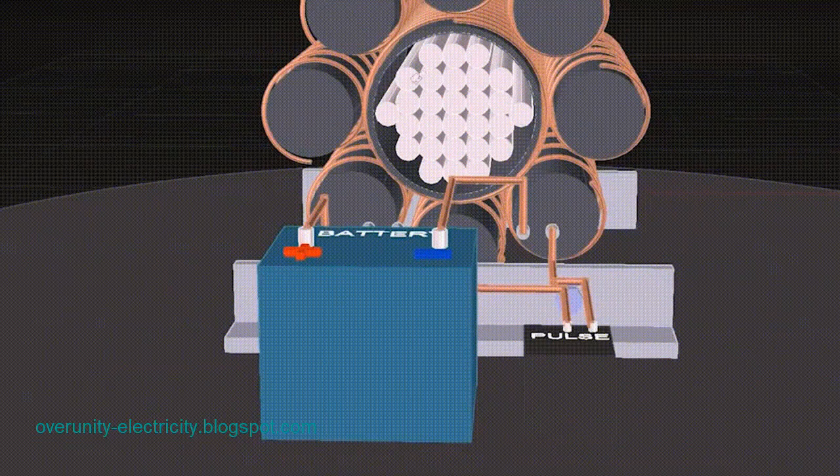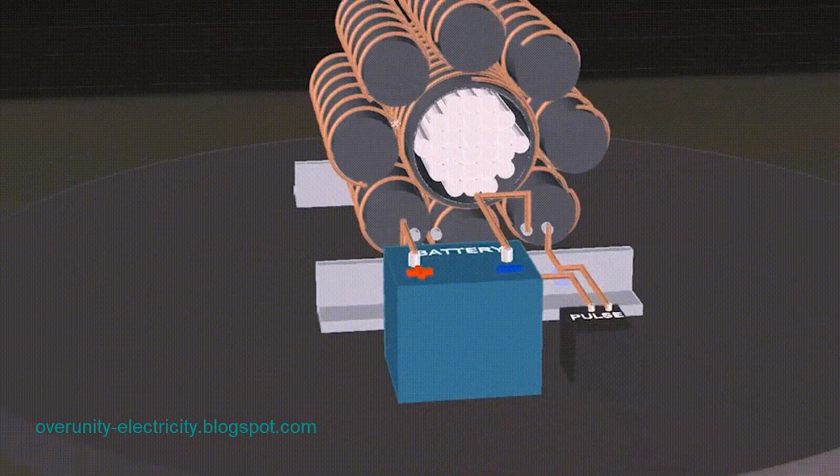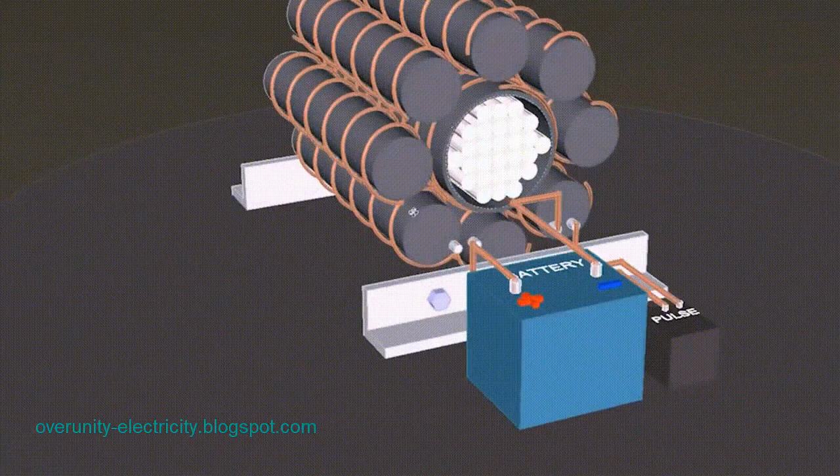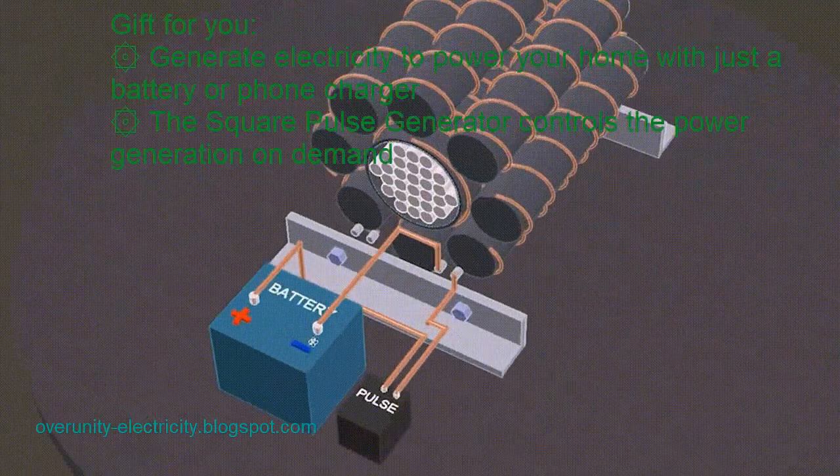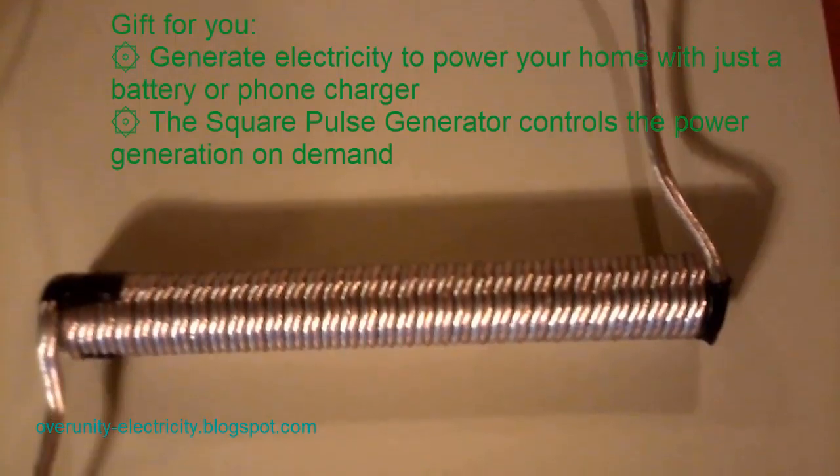There are many inventors who have contributed to Tesla's original idea. Thomas Henry Moray invented a radiant energy device. Edwin Gray had the 50-horsepower EMMA motor, and Paul Bowman designed a Tesla machine with two parallel magnetic discs.